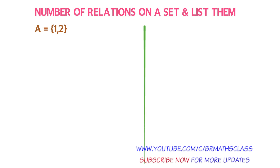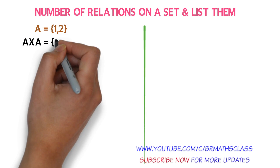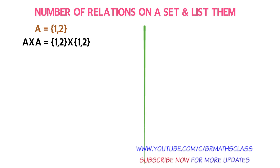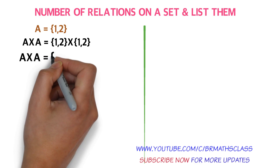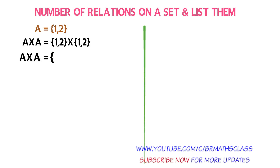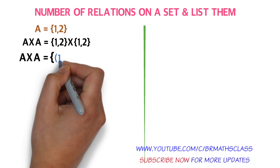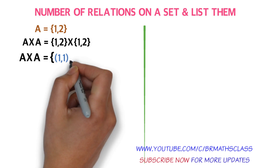Now I'll calculate A cross A. In the previous class we learned how to calculate the Cartesian product of sets. A cross A equals set {1, 2} cross set {1, 2}. You consider the first element in the first set and pair it with all elements of the second set: ordered pair (1,1) and ordered pair (1,2).